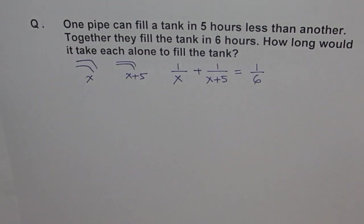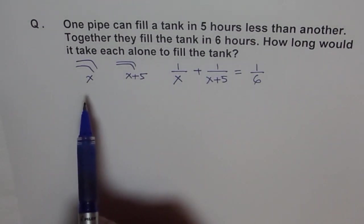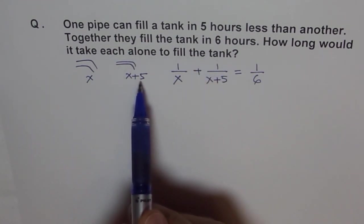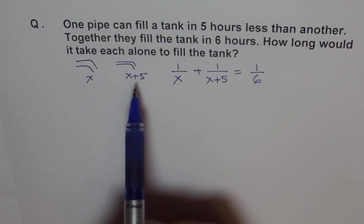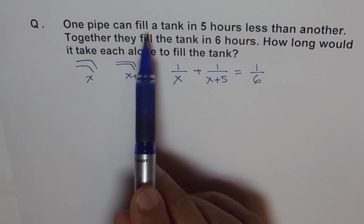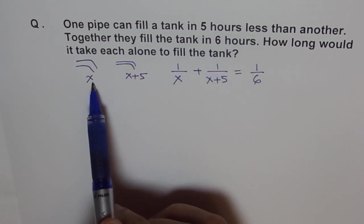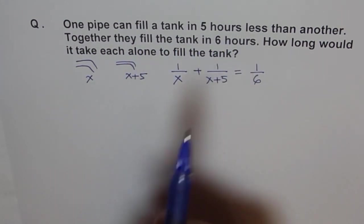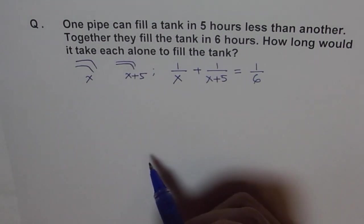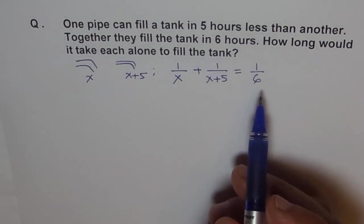That is how we get our equation. So we say let the time taken by the larger pipe be x hours. The smaller will take five hours more, which is x plus five, which also confirms our statement in a different way. One pipe fills a tank in five hours less, so this takes five hours less than that. That's the whole concept which I'm going to use.